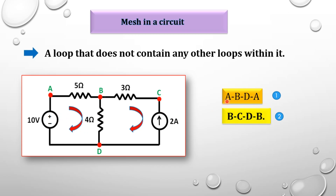There are two meshes in this circuit. Mesh 1 is A-B-D-A, and mesh 2 is B-C-D-B. Each of these is an independent closed loop with no other loop contained inside it. The total mesh count is two.